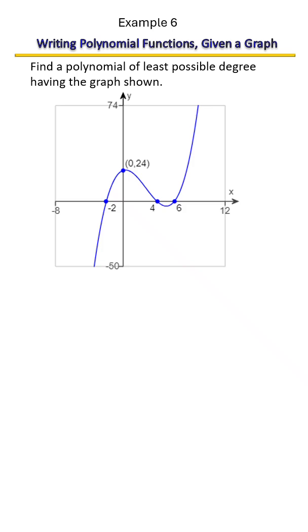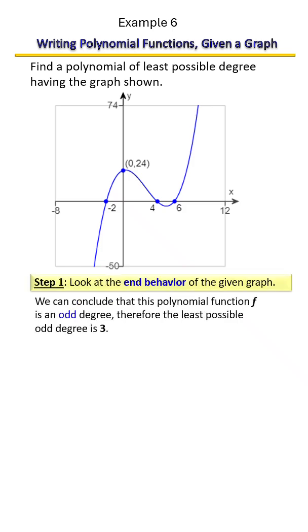The fact that we have an S-shaped graph tells us that this is an odd degree polynomial. I also see that we have three zeros - one, two, three - remember zeros, a.k.a. x-intercepts. So we can conclude that this is a polynomial function that's an odd degree, and therefore the least possible odd degree is three.